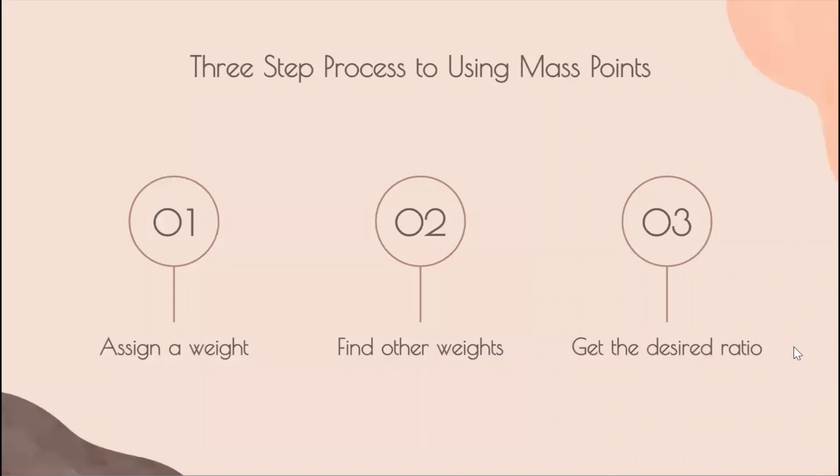So here's the three-step process to using mass points. First, you assign a weight. Next, you use that to find the other weights using the given ratios, and finally you find the desired ratio. Be warned, many mass points problems are hidden. A lot of problems use mass points as one step in a larger process.